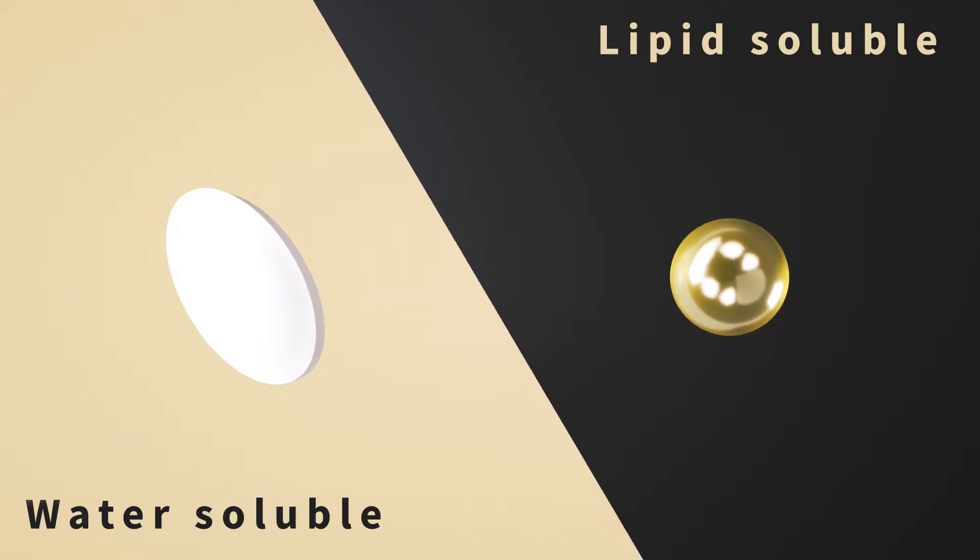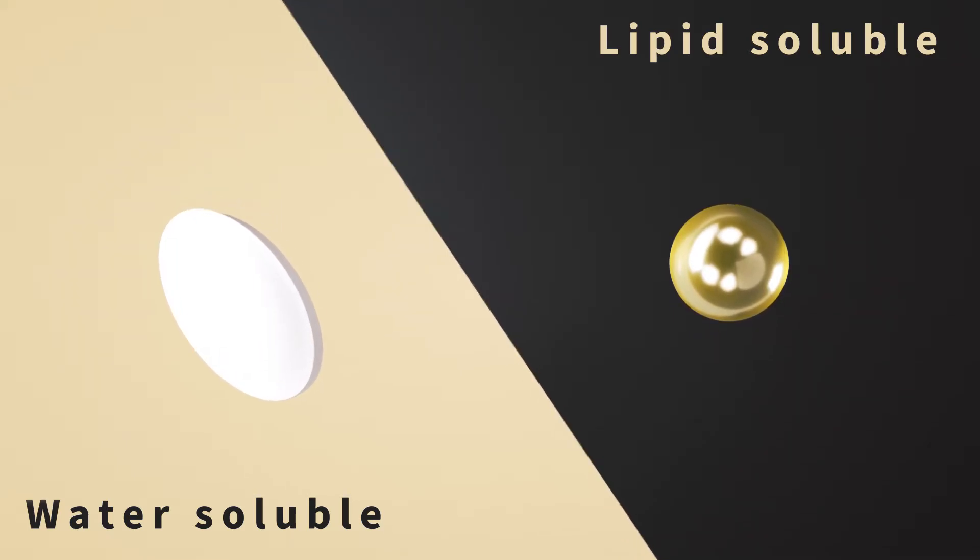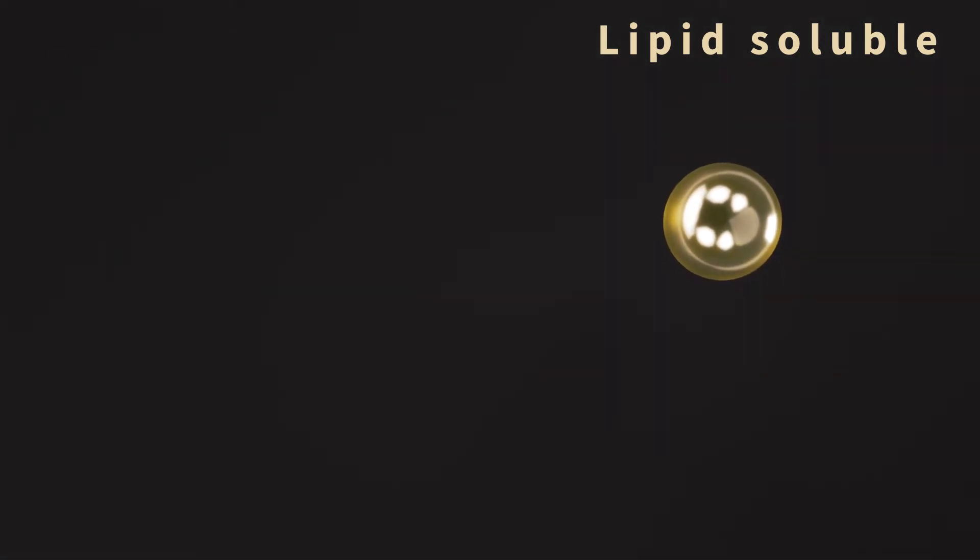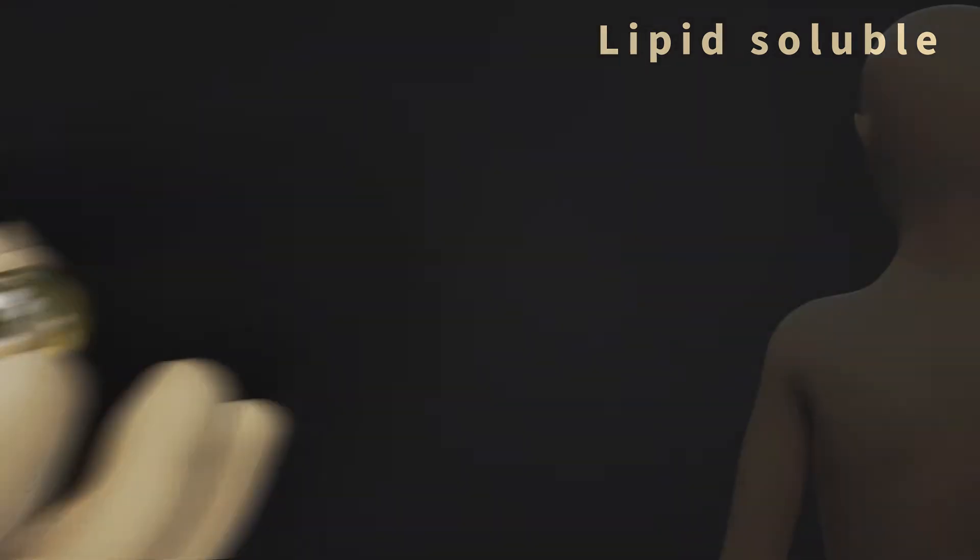Water-soluble vitamins such as vitamin C and B vitamins are absorbed directly in the bloodstream. The uptake of lipid-soluble vitamins, on the other hand, is a little more complicated.